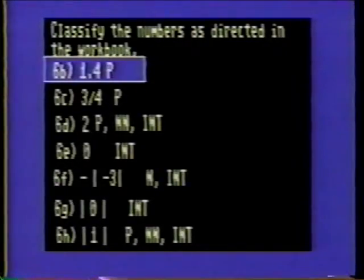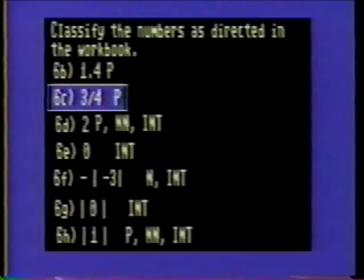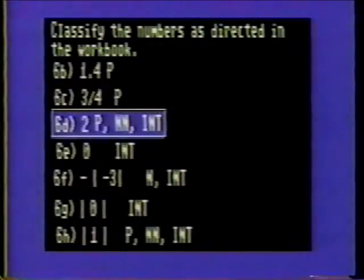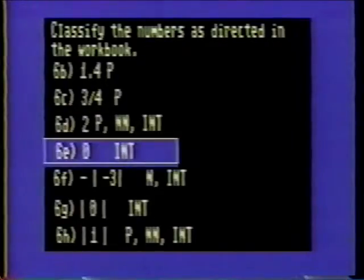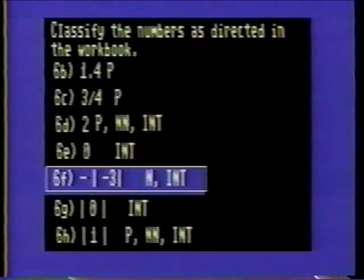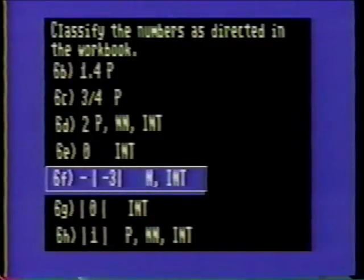Problem 6B: 1.4 is a positive number. Problem 6C: 3 fourths is a positive number. Problem 6D: 2 is a positive number, a natural number, and an integer. Problem 6E: 0 is an integer. Problem 6F: Minus the absolute value of negative 3 is negative 3. The solution is a negative number and an integer.